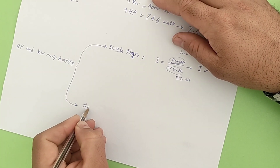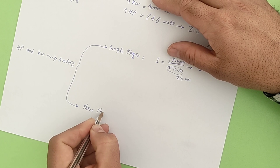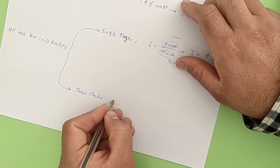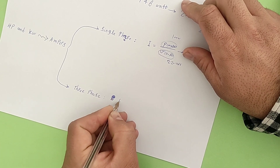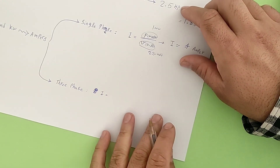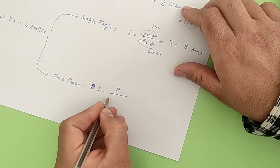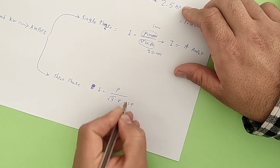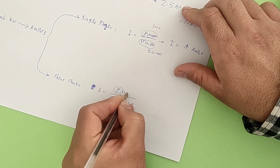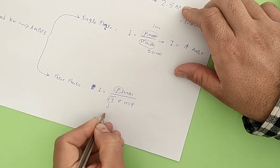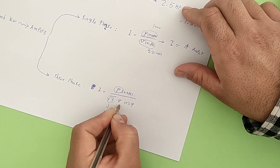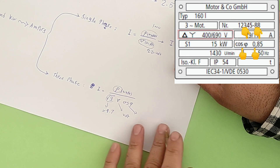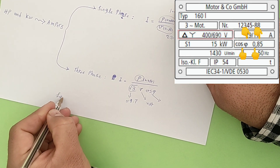Now we get the method of calculating the current in three-phase consumers. In three-phase consumers, the electric current equals the power of the consumer, written in watts, divided by the square root of three, multiplied by voltage, multiplied by cosine phi. Cosine phi is a power factor of the consumer, whose value is written on each consumer and varies between 0 and 1.